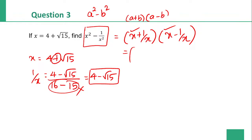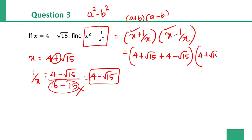x square minus 1 by x square. x plus 1 by x: x value is 4 plus root 15 plus 1 by x is 4 minus root 15. Plus root 15 minus root 15 cancel. So 4 plus 4 is 8. x minus 1 by x: root 15 plus root 15 is 2 root 15.